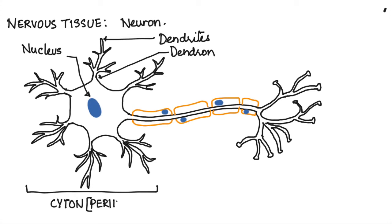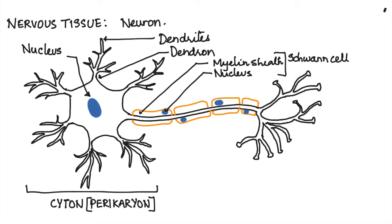The cell body also shows a long process which is covered by myelin sheath and shows the presence of a nucleus which forms the Schwann cell. The Schwann cell covers the long process.